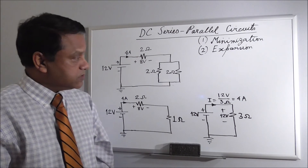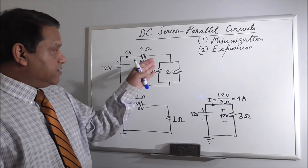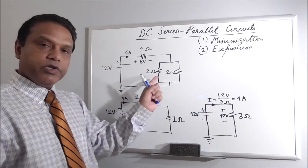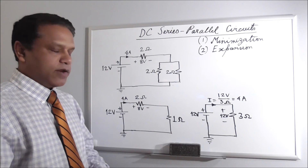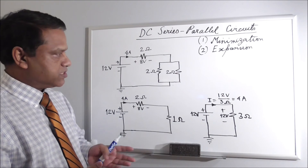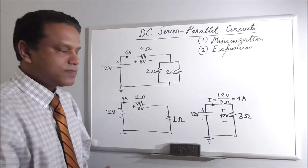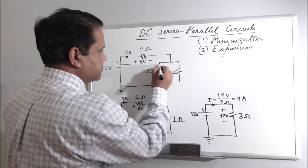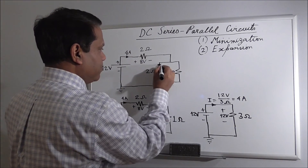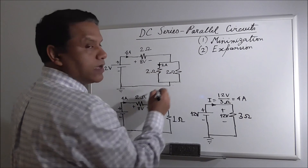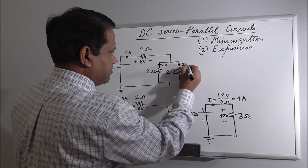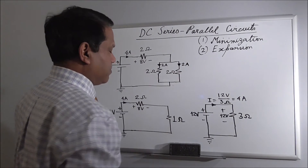Now, what is the current in the two parallel branches? When the 4-ampere current arrives and sees two equal resistors, by symmetry the current is equally divided. So each branch carries 4 divided by 2, which is 2 amperes.